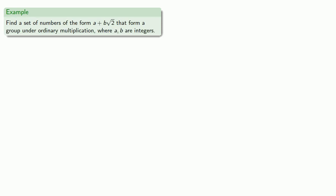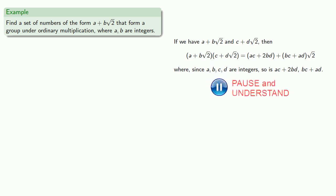Or let's find a set of numbers of the form A plus B square root of 2 that form a group under ordinary multiplication where A and B are integers. So first let's check closure. If we have A plus B square root of 2 and C plus D square root of 2, their product... and since A, B, C, and D are integers, so is AC plus 2BD and BC plus AD. And so this number is also of the form integer plus integer times square root of 2, and so we have closure.